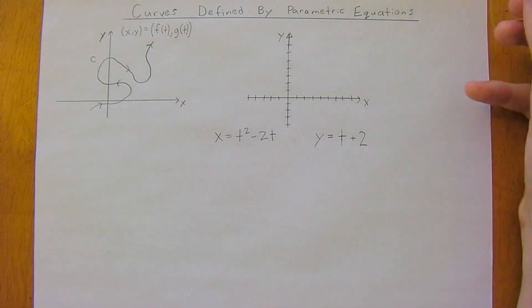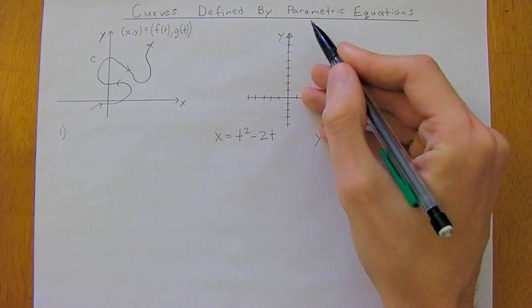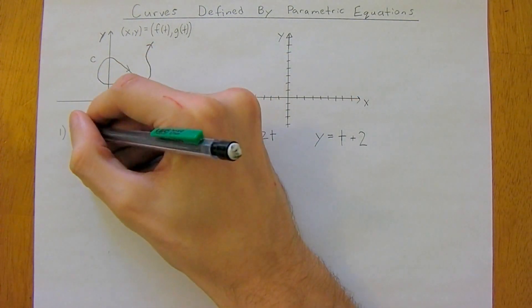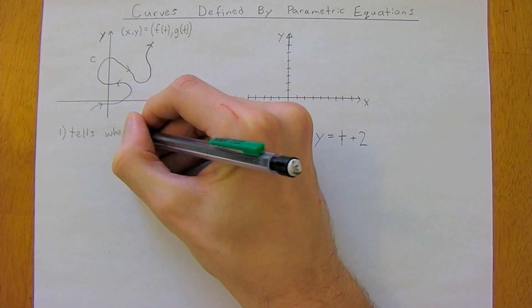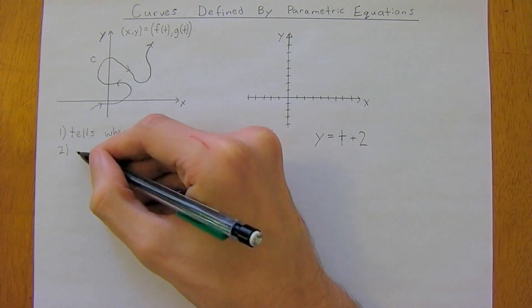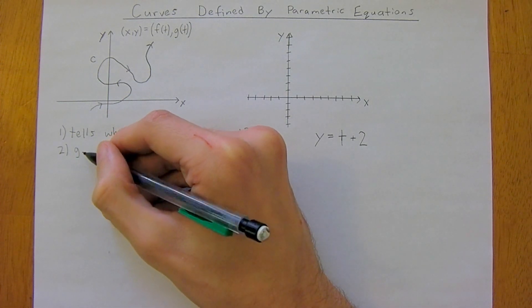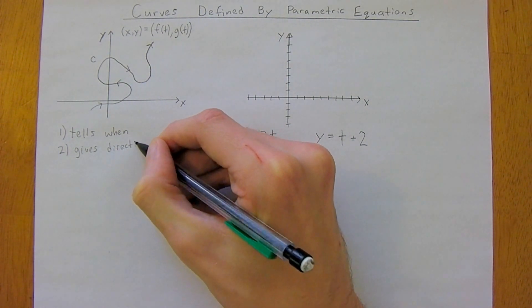There's two really important things to remember with parametric equations. The graph tells when we are at a point in time, and the graph gives a direction.